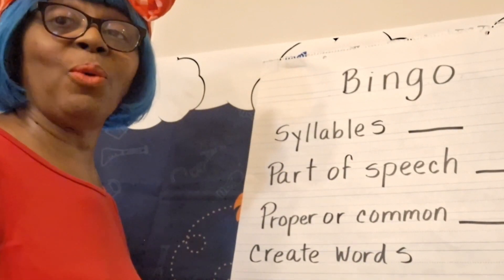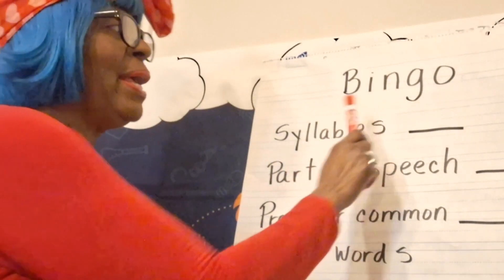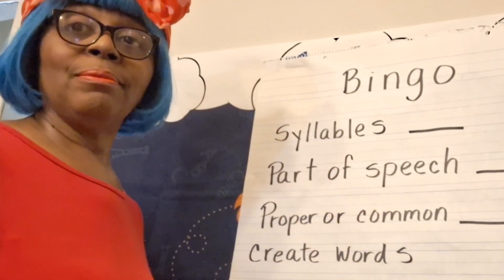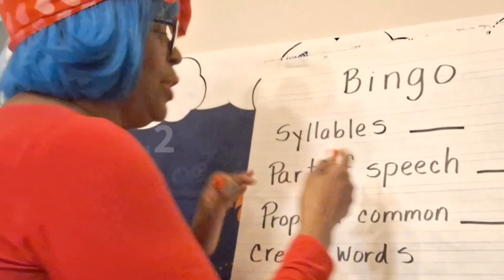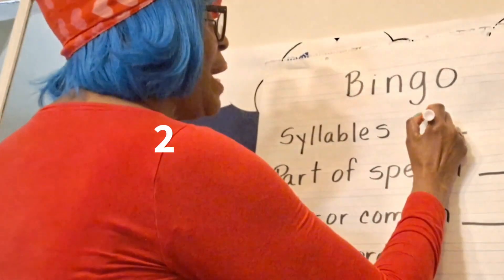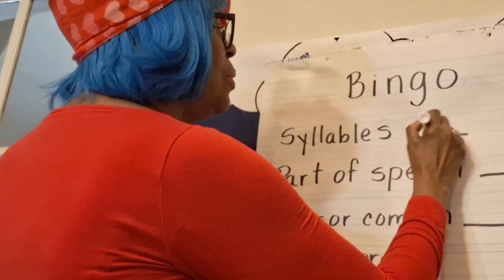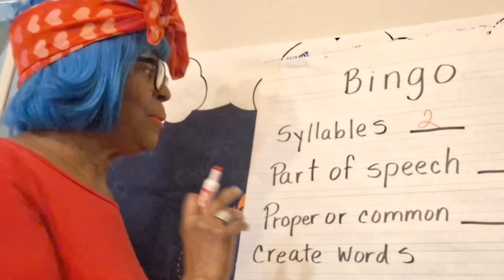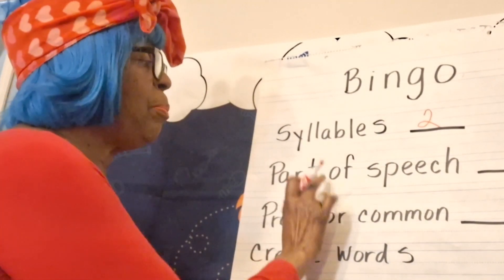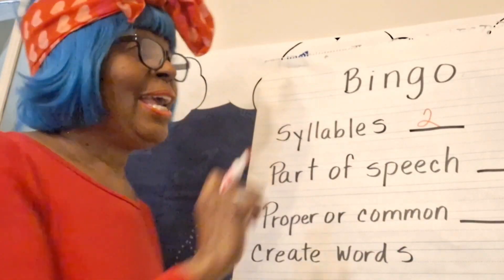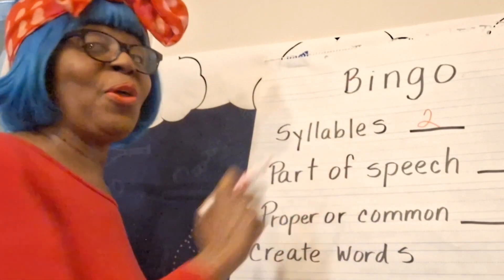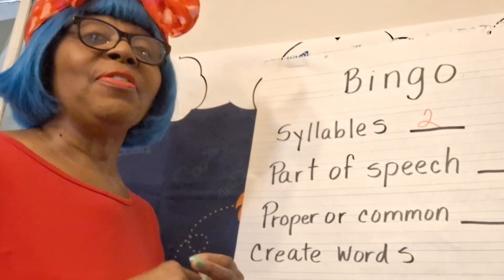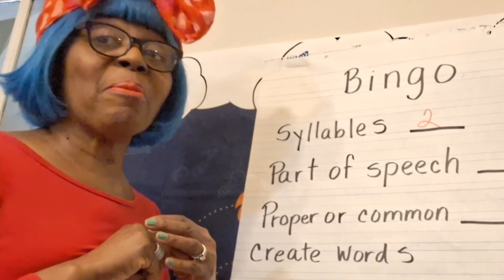So the word Bingo — how many syllables or sounds do you hear in the word Bingo? Let's clap it out: Bin-go. Two! Excellent — two sounds, two syllables. Now I want you to think: what part of speech is the word Bingo? Remember, the song goes: there was a farmer had a dog and Bingo was his name-o.